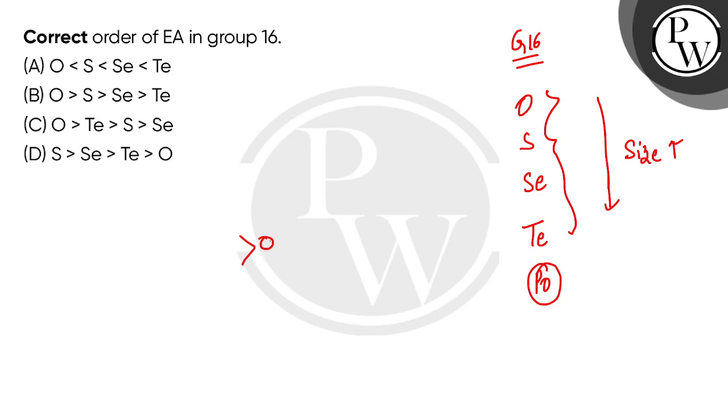So for oxygen, the value is the lowest. What is the size of the sulfur here? It is a perfect size. The size of the atom is perfect and the orbital size is perfect.